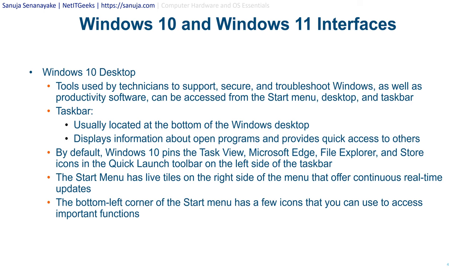Windows 10 and Windows 11 Interfaces. Tools used by technicians to support, secure, and troubleshoot Windows, as well as productivity software data, can be accessed from the start menu, desktop, and taskbar. The taskbar, usually located at the bottom of the Windows desktop, displays information about open programs and provides quick access to others. By default, Windows 10 pins the task view, Microsoft Edge, File Explorer, and Store icons in the quick launch toolbar on the left side of the taskbar.